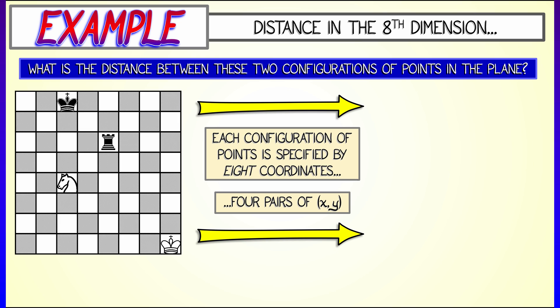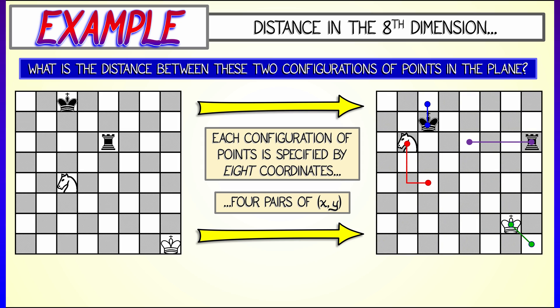And now, I want to change configurations, move to a new point in configuration space. And what's going to happen, in reality, is I'm moving each of these four objects to new locations in the plane. So, I have new x and y coordinates for each object. Now, I want to know, what is the distance between the first configuration and the second configuration?